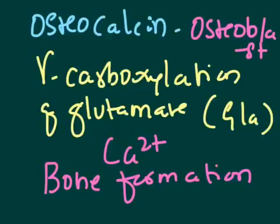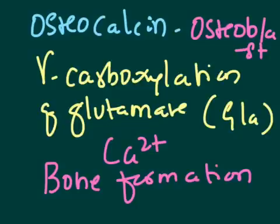Note that although vitamin K has a function in coagulation, whenever vitamin K levels are just sufficient, the priority of vitamin K is coagulation. Whenever vitamin K levels are abundant, it participates in gamma-carboxylation of glutamates present in osteocalcin molecules, thereby increasing bone density. So carboxylated osteocalcin indicates abundant availability of vitamin K, thereby increasing bone density, and it correlates positively with increased bone density.